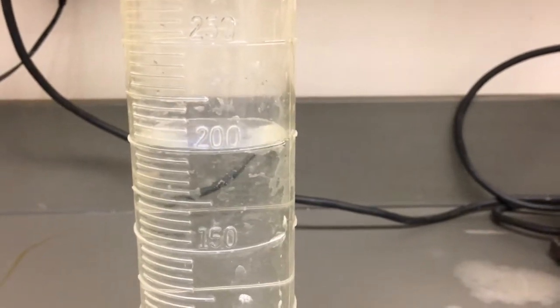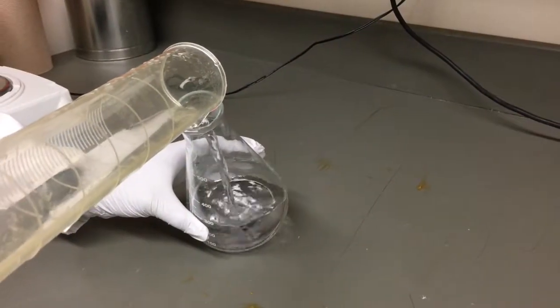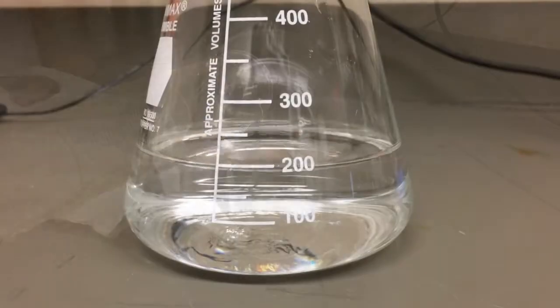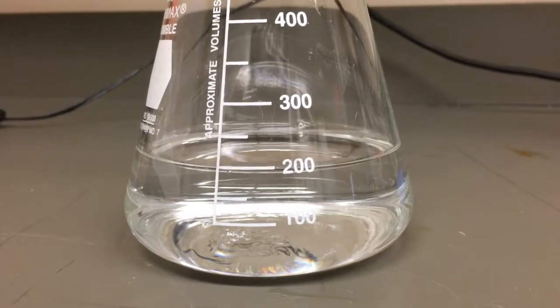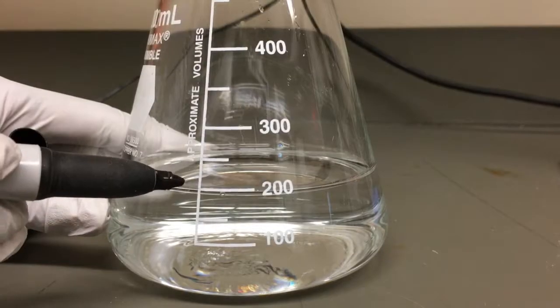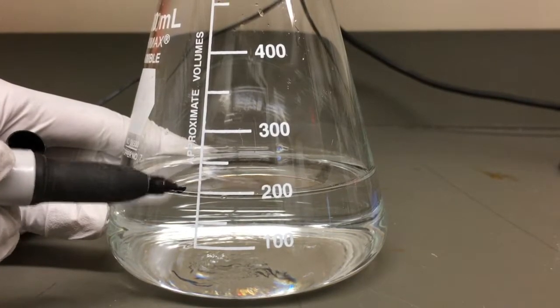Verify the correct volume to be prepared using a graduated cylinder, as volumes on beakers and Erlenmeyer flasks are only approximate. Pour measured water into the flask and mark the fill line. If more precise measurements are required, a volumetric flask must be used.